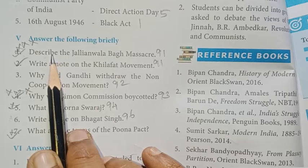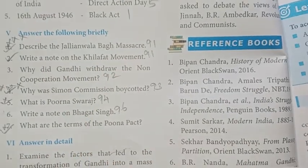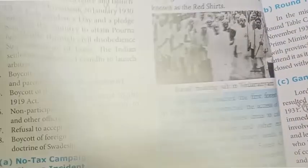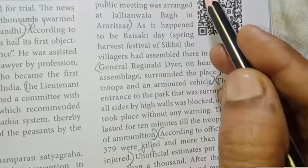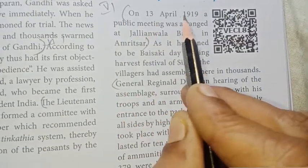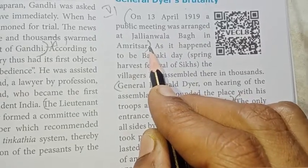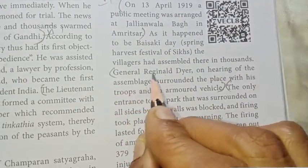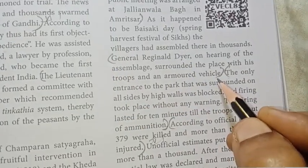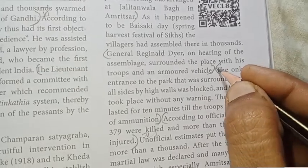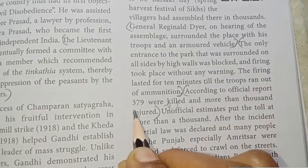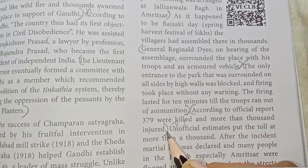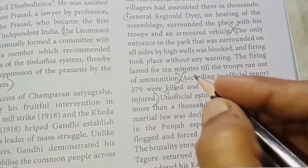Answer the following briefly. First: Describe the Jallianwala Bagh Massacre — page 91. Heading: General Dyer's Brutality. Point-wise — First point: On 13 April 1919, Amritsar. Second point: General Reginald Dyer with armored vehicle. Third point: Ammunition was fired. Fourth point: According to official report, 379 were killed and more than 1000 injured. Four points total.